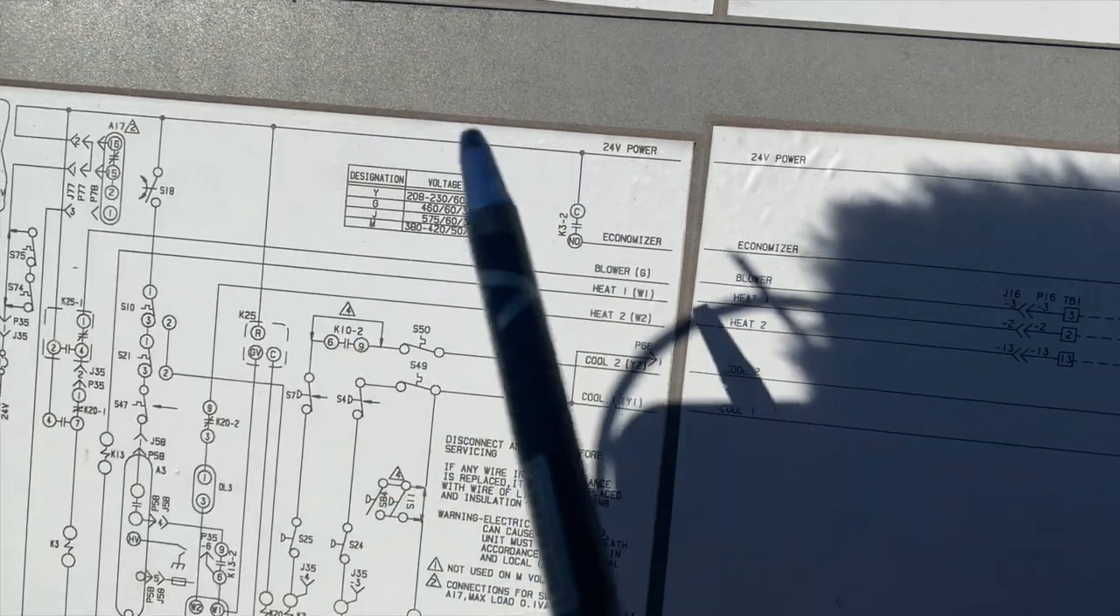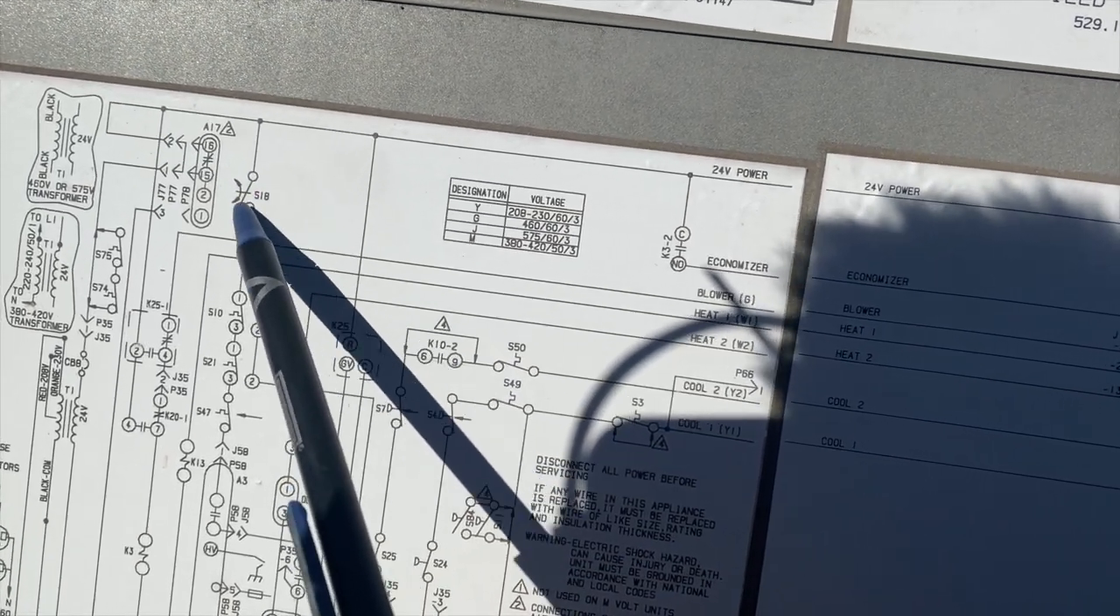I've been looking at the schematic here just to make sure that I know how this works because every manufacturer is a little bit different. Basically this is our 24 volts coming in right here, we have S18 which is our centrifugal switch. It's going to go through S10 which is our primary high limit switch. These are all just limit switches. Then it's going to go into this guy right here, which is our ignition module.